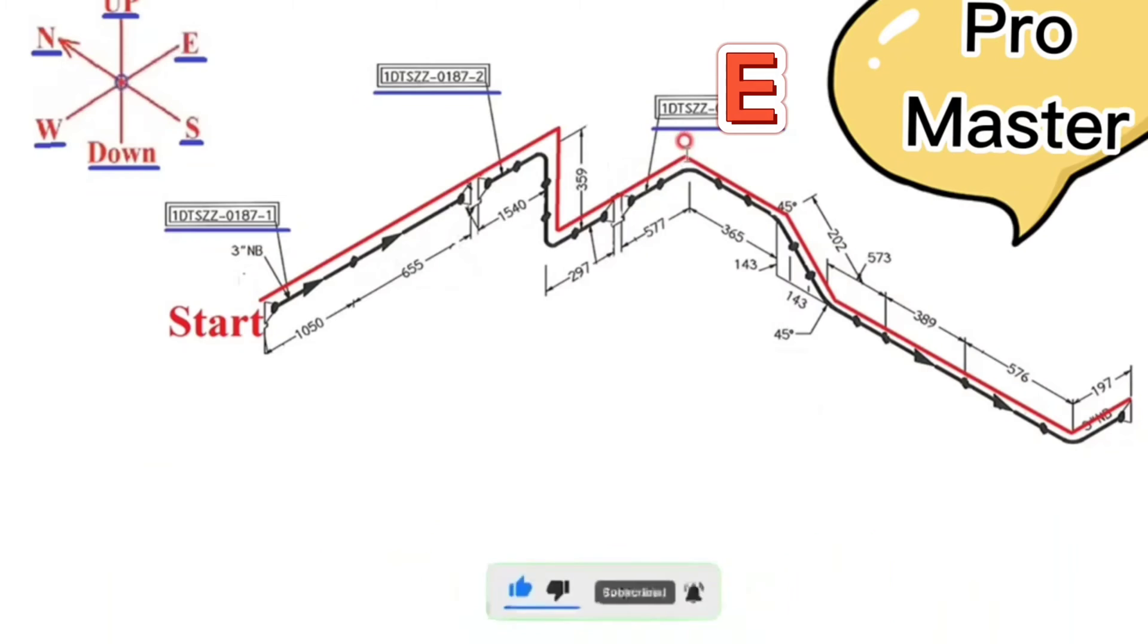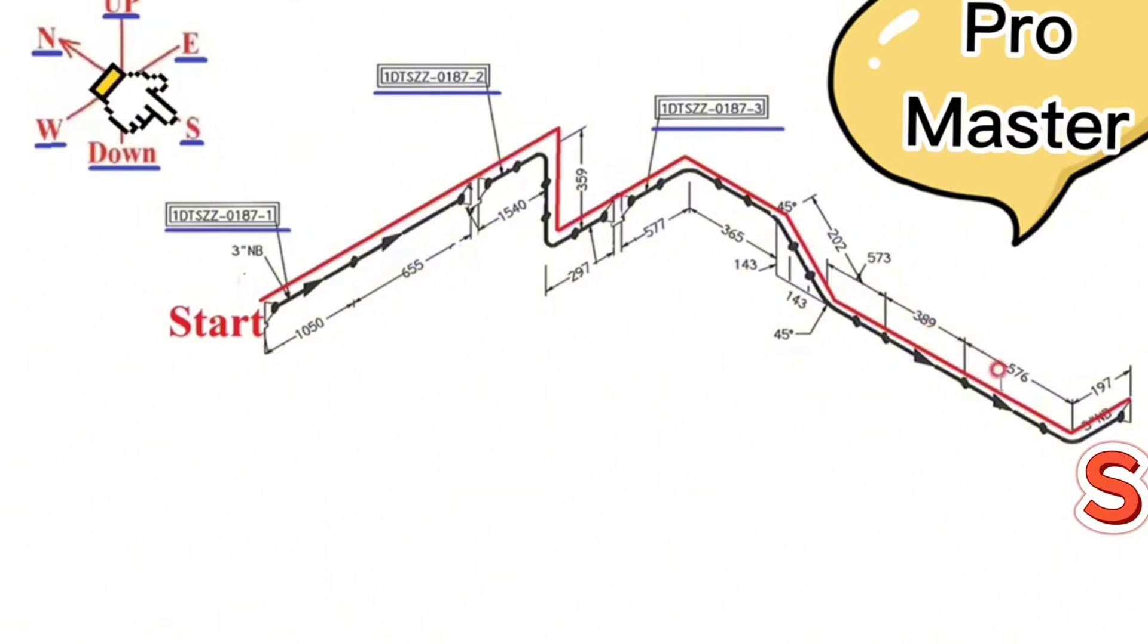And after this point, the pipe travels to the south direction. At this point pipe travels down and then at a 45 degree angle continue to the south. From here the pipe travels to the south. And after this point the pipe turns to the east direction.